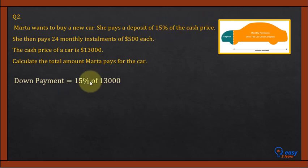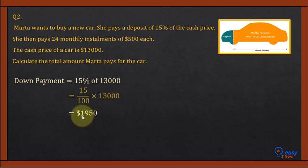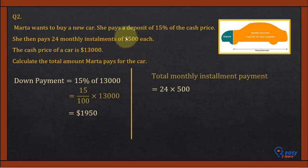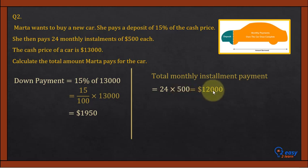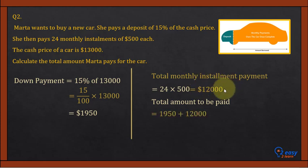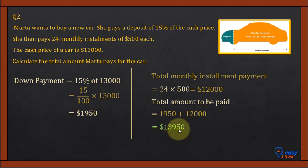The down payment is 15% of $13,000: 15/100 × 13,000 = $1,950. The total monthly installment payment is 24 × $500 = $12,000. So the total payment is the initial deposit plus monthly installments: $1,950 + $12,000 = $13,950. That is the total amount Mata has to pay.